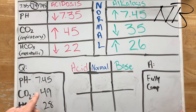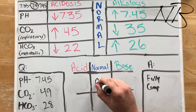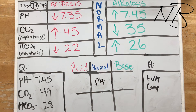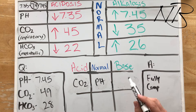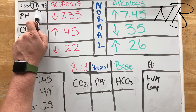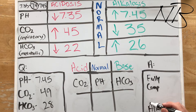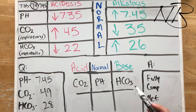For our fourth question, our pH is 7.45 — not above 7.45, but 7.45 exactly, so it's normal. CO2 is 49, above 45. Bicarbonate is 28, which is above 26. Normal pH with altered CO2 and bicarb, so we know we're fully compensating. 7.45 is right at the top of normal, pushing more towards an alkalotic state, so we know we're in alkalosis. What's causing it? In this case it's our bicarb, pushing us towards metabolic alkalosis — but it's fully compensated.